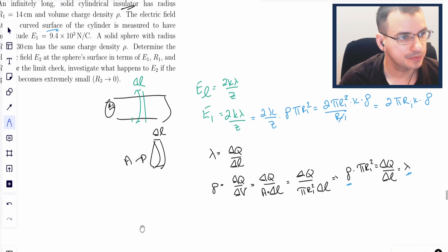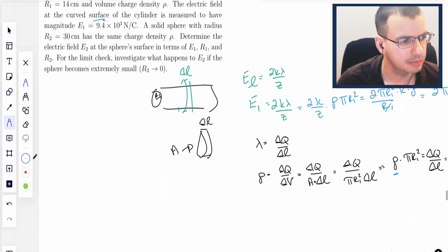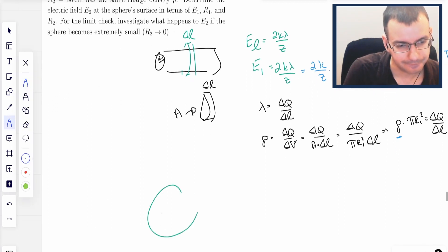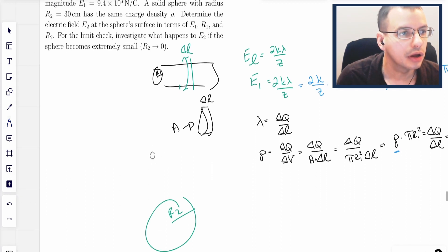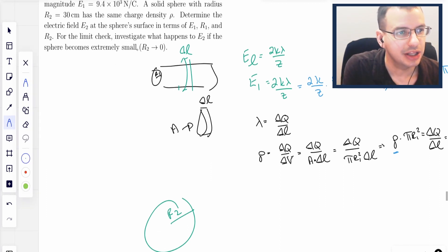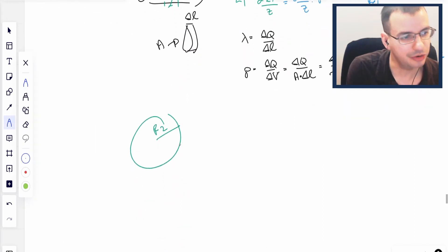Now let's do something similar, but look at the sphere. We have a solid sphere, radius R2. We want to determine the electric field E2 at the surface of the sphere in terms of E1, R1, R2. So I'm just going to write E equals KQ over R squared.